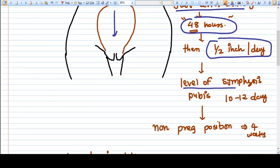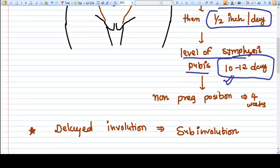If you consider half inch per day, it reaches at the level of pubic symphysis at 10 to 12 days, and in non-pregnant position it takes up to four weeks.